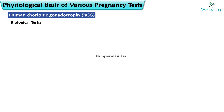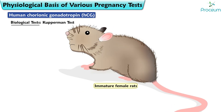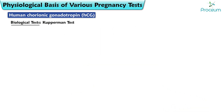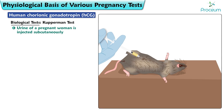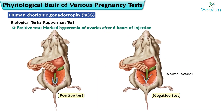Kupperman Test: Immature female rats are used for this test. The urine of a pregnant woman is injected subcutaneously. A positive test is indicated by marked hyperemia of the ovaries after 6 hours of injection.